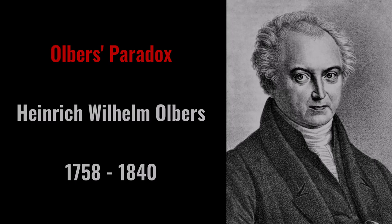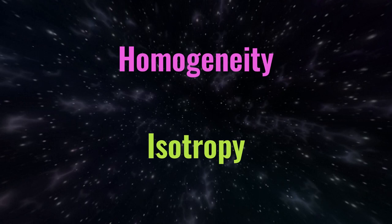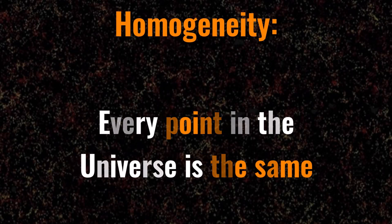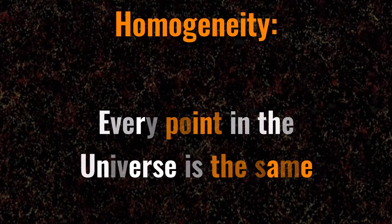Every credible model for our universe assumes two important things: homogeneity and isotropy. Homogeneity is that every point in the universe is the same. This is true for our universe. On large scales, the universe is the same everywhere, mostly made out of voids with some dark energy thrown in there.